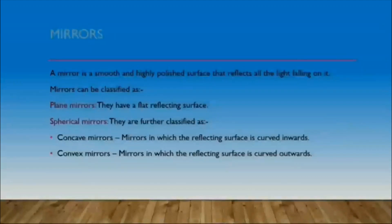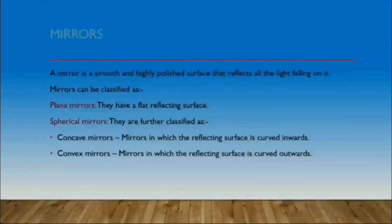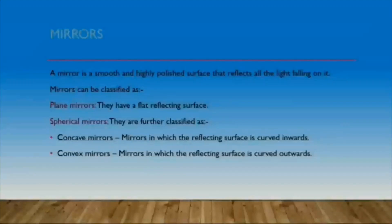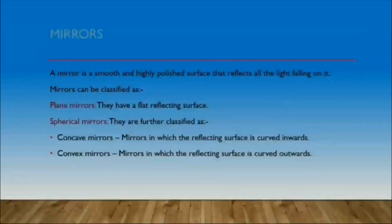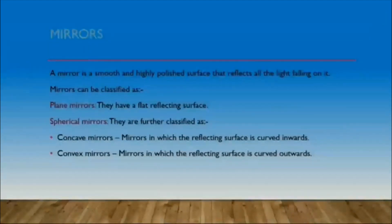Plain mirrors are those mirrors which have a flat reflecting surface. Spherical mirrors are those mirrors which have a curved surface. Spherical mirrors are further classified as concave mirror and convex mirror. Concave mirrors are those mirrors in which the reflecting surface is curved inwards, and convex mirrors are those mirrors in which the reflecting surface is bulged outwards.